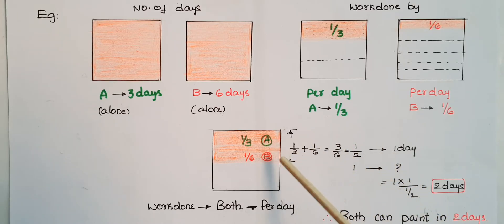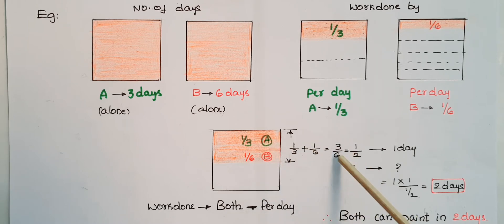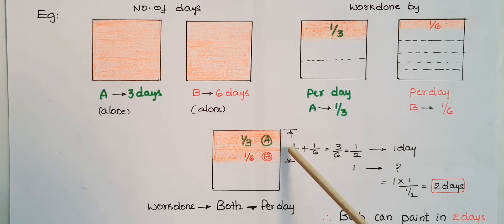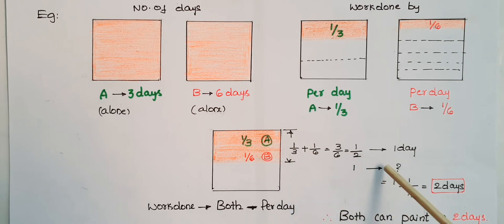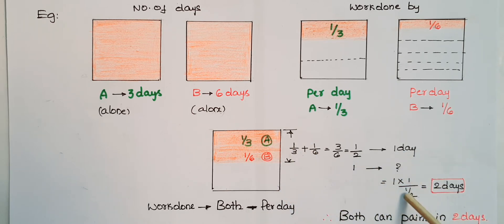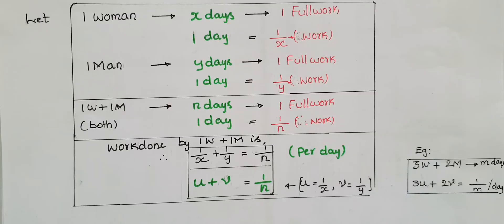Now both together can paint per day: one-third plus one-sixth, which equals three-sixths, that is one-half. So they can paint half the wall per day. Therefore, for one full wall, it takes one divided by one-half, which equals two days. So both can finish painting in two days.